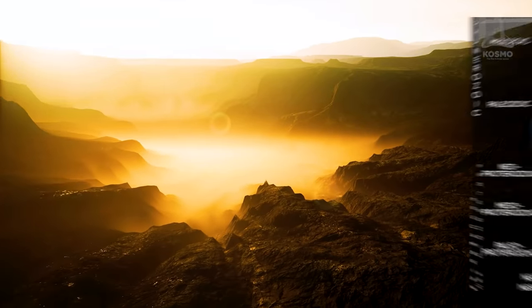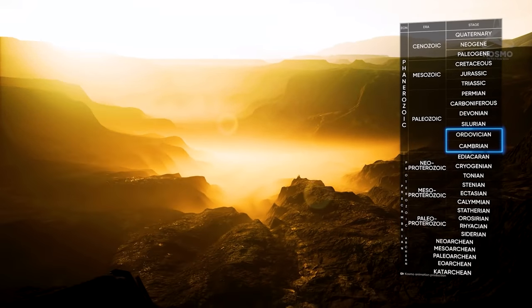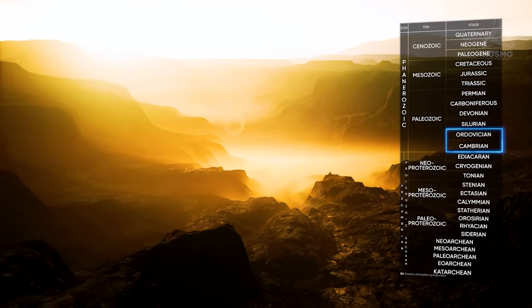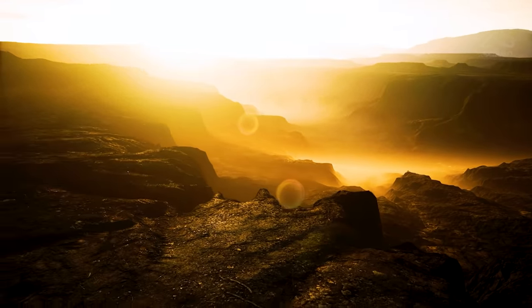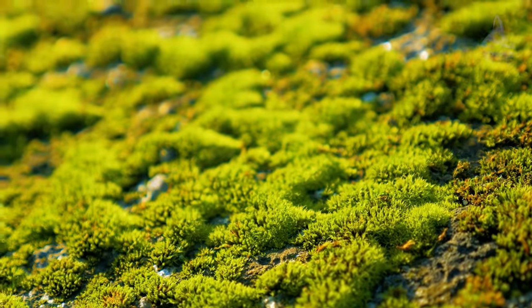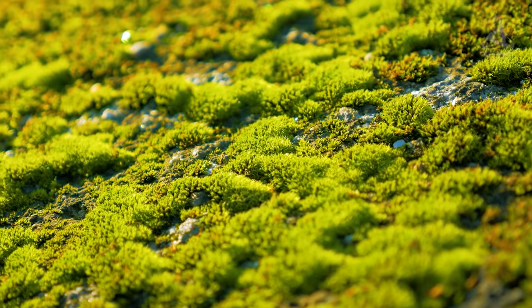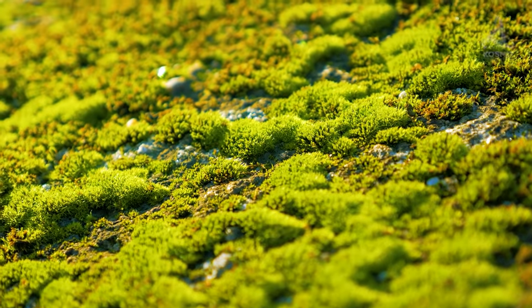Still, up until the Silurian period, which started approximately 444 million years ago, there weren't any life forms to speak of on all these expanses. Only some simple mosses and lichens were slowly establishing their dominance on land.